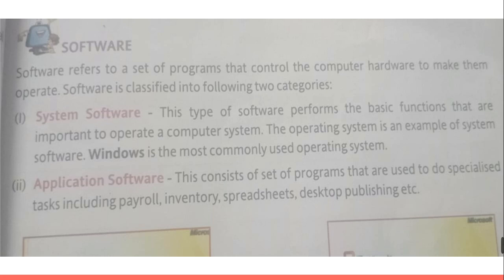So what is system software? System software consists of the operating system. The operating system is the main program — for example, Windows — which runs your computer.